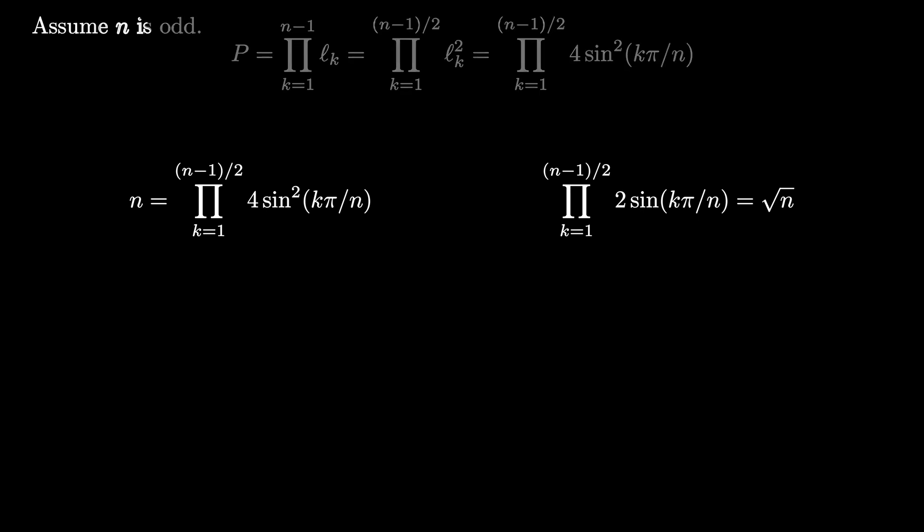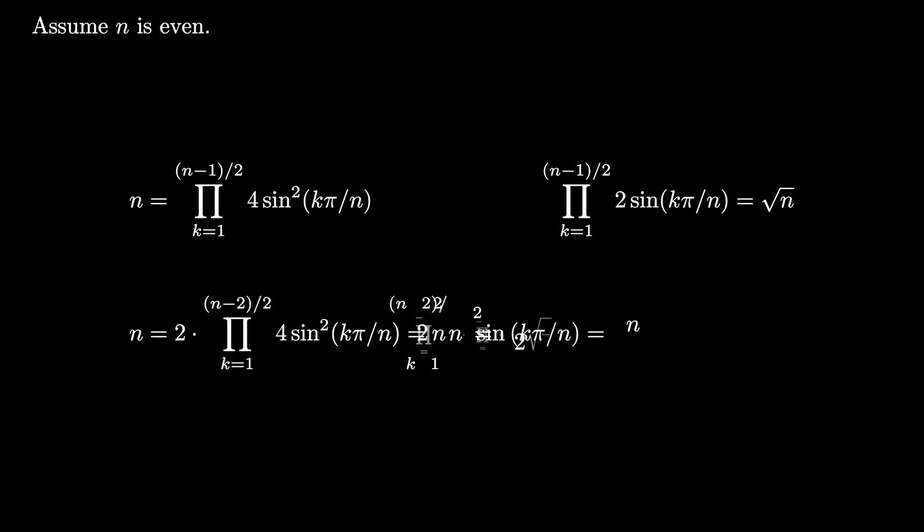We can provide a similar argument when n is even, and in this case we get an extra 2 out in front, and now the product ranges from k equals 1 to (n-2)/2 of 2sin(kπ/n), and in this instance we get that the product is √(n/2).